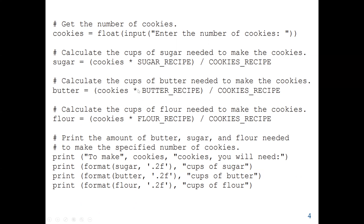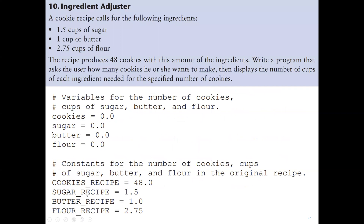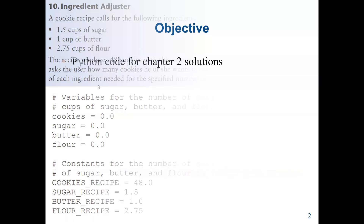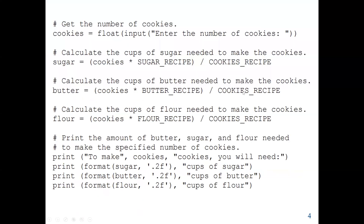We can also calculate the cups of butter needed: the number of cookies times butter_recipe divided by cookies_recipe. The cookies_recipe constant is 48. So if I need only 10 cookies, the amount will be less than the original recipe — for example, 10 times butter_recipe divided by 48. If I need 100 cookies, the amount will be more, because the original recipe is based on producing 48 cookies.